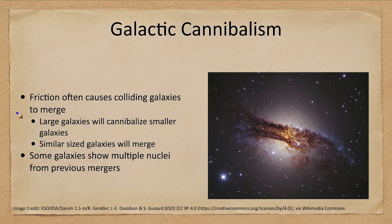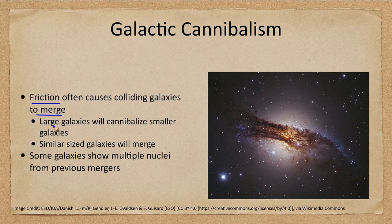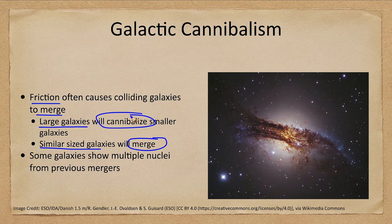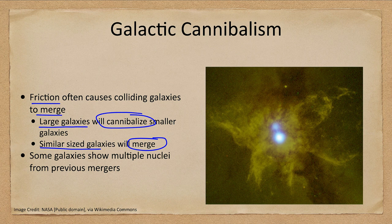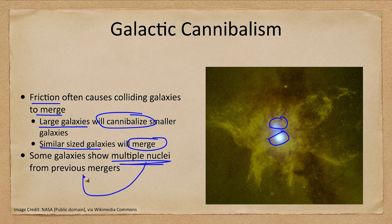We talk about galaxy collisions but also about galactic cannibalism. Friction often causes colliding galaxies to merge. Centaurus A, which we've looked at previously, is two galaxies in the process of colliding — they will merge together to become a single even larger galaxy. Similarly sized galaxies merge, while large galaxies will cannibalize and consume smaller galaxies. Some galaxies show multiple nuclei from these collisions; here we see one example where two nuclei are still separate and have not yet coalesced. That will eventually happen, and we can see evidence of previous mergers.